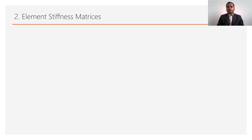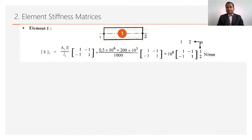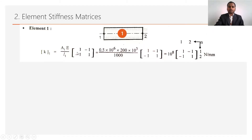The second step of FEM is to develop the element matrices. For each element after discretization, we prepare the elemental stiffness matrix. Starting with element number 1 (nodes 1 and 2), the stiffness matrix equation is k = (AE/L) × [1, -1; -1, 1]. For element 1: k₁ = A₁E/L₁, giving a matrix of 10⁸ × [1, -1; -1, 1].